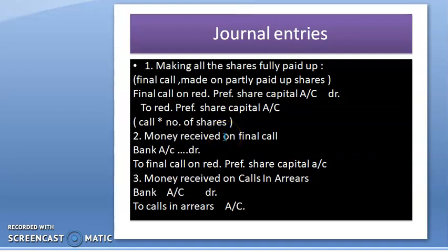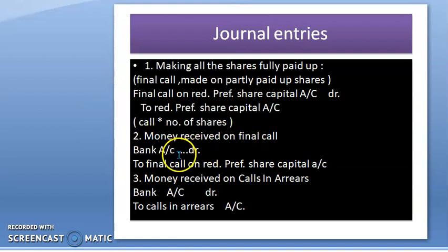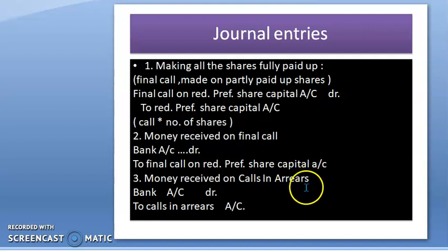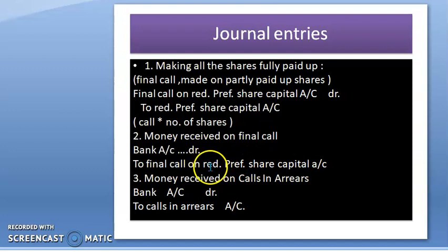After that, you are going to receive your final call. Once you are receiving the final call, the entry will be: Bank Account Debit to Final Call on Redeemable Preference Share Capital Account. When you receive that final call money, you write Bank Account Debit to Final Call on Redeemable Preference Share Capital Account.